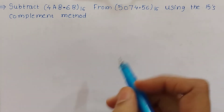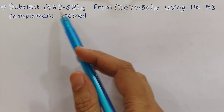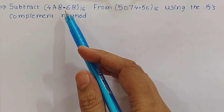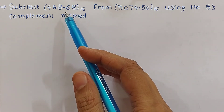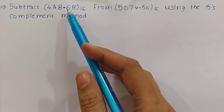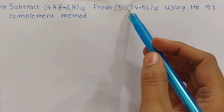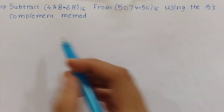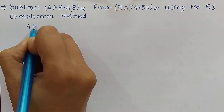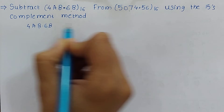The number which is to be subtracted is 4AB.6B. So we need to take the 15's complement of this number and add it to the other number. We will take the 15's complement of 4AB.6B.